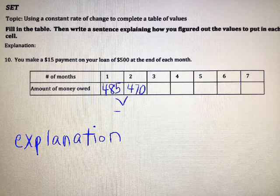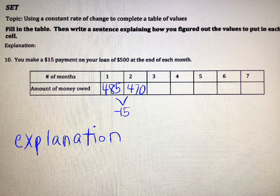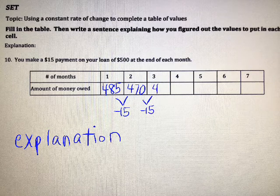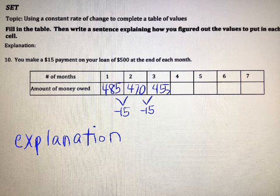Each time, we're paying $15, so we're subtracting $15 from our total. And this pattern will continue, subtract $15, and we'll get $455 and then $440.